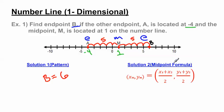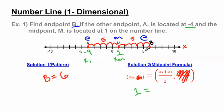Now let me show you how to use the midpoint formula. I'm using just the x-axis here, so I don't have any y-coordinates and can ignore the y-portion. The x sub M is the location of the midpoint, which we know is 1. A is going to be x sub 1, and B is going to be x sub 2 — and keep in mind I don't know the answer of 6 right now. We know x sub 1 is negative 4, plus x sub 2 unknown, divided by 2.